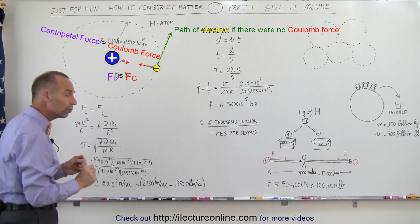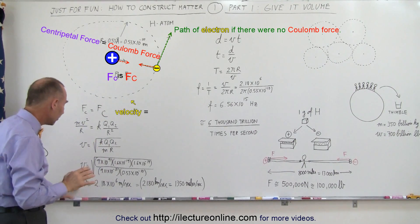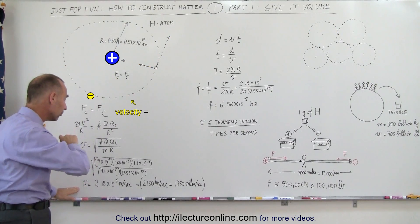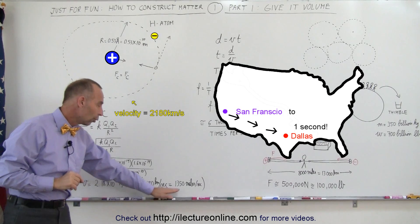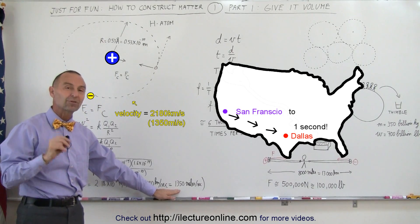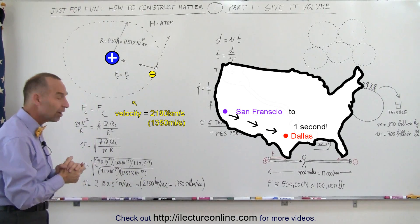mv squared over r equals the Coulomb force. And if we then calculate the velocity of that electron going around the nucleus, it turns out to be more than 2,000 kilometers per second or 1,350 miles per second. Imagine that speed of that electron.